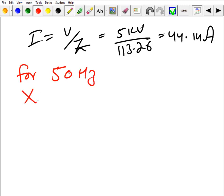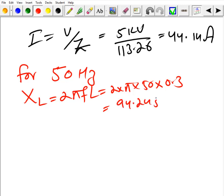So XL will be simply 2πfL, so it will be 2 into π into 50, and rest of the things are same, only the frequency is changing, so it will be approximately 94.245 ohm. Then Z impedance will be approximately 94.44 ohms.